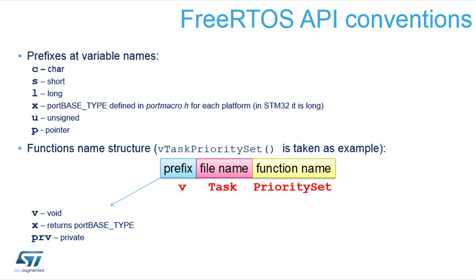The native API has conventions for variable names — it has a prefix that shows what type the variable is: whether its type is a character, short, long, pointer, unsigned, or a specific return type.